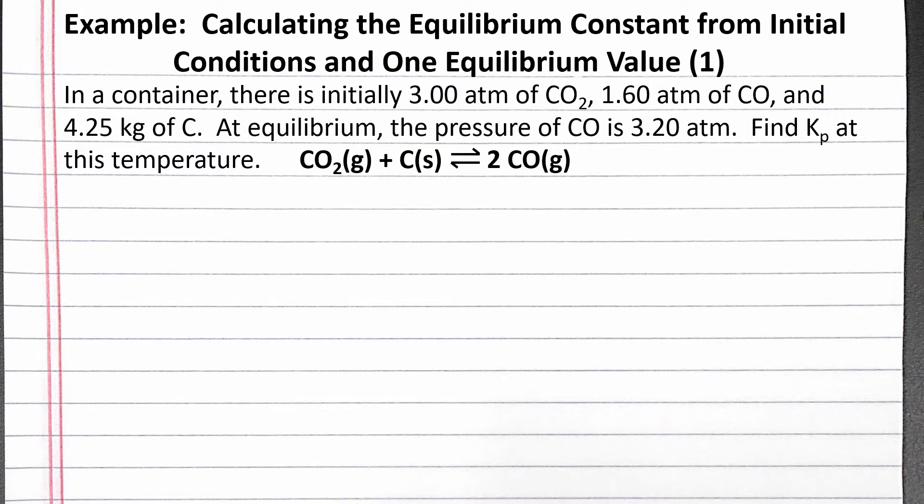Our problem reads: in a container, there is initially 3.00 atmospheres of carbon dioxide, 1.60 atmospheres of carbon monoxide, and 4.25 kilograms of carbon. At equilibrium, the pressure of carbon monoxide is 3.20 atmospheres. Find Kp at this temperature.